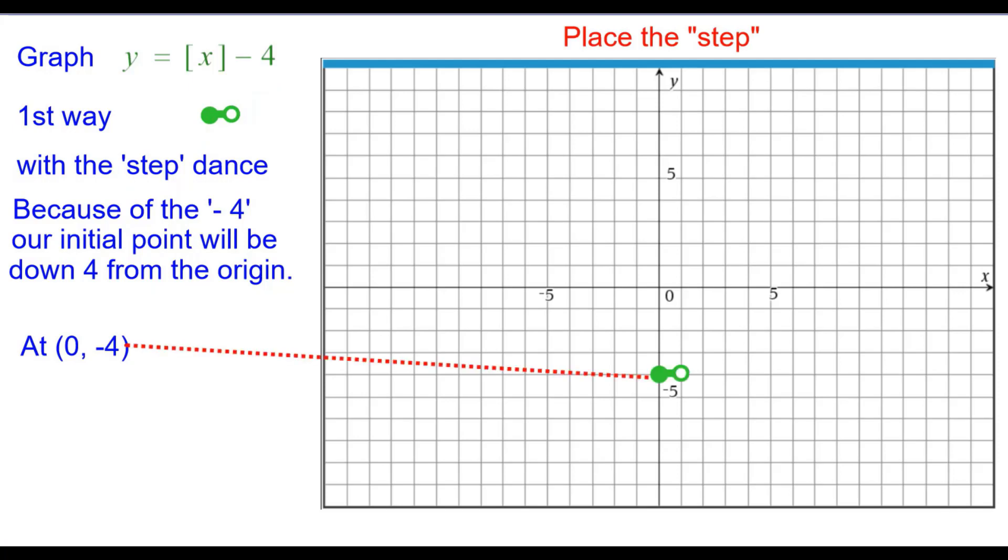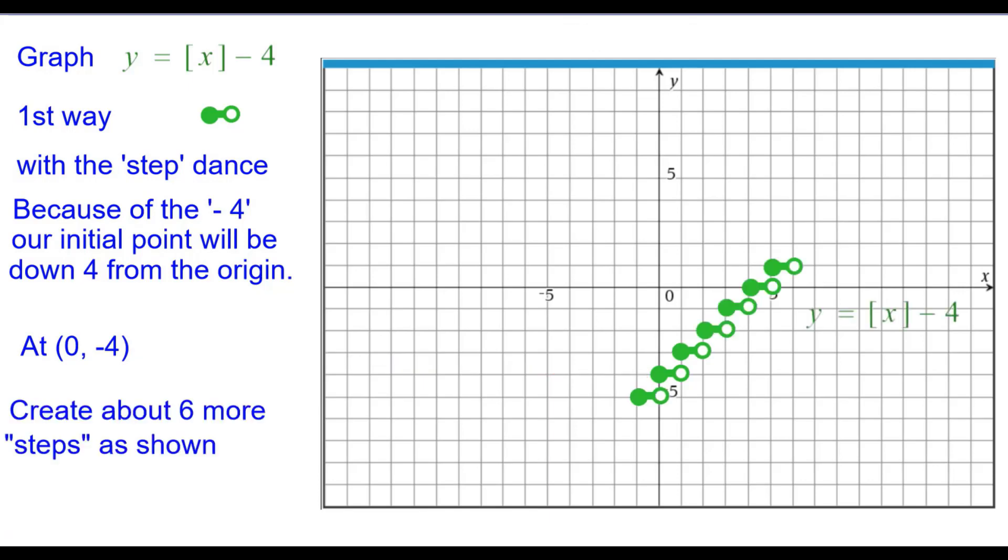So we need to place the step there at (0, negative 4). We need to create about 6 more steps as shown. This is the graph of y equals the greatest integer of x minus 4.